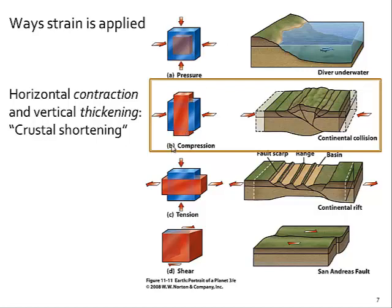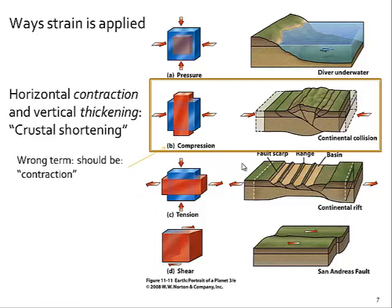Looking at contractional and collisional environments, here we have horizontal shortening — crustal shortening — where lithosphere is shortened laterally and thickens vertically. We see our reference body in blue showing how it shortens laterally and thickens vertically: this is a contractional setting. You should actually avoid the term 'compression' in this context, because compression refers to stress features, whereas here we are looking at strain — the actual change in shape: horizontal shortening and vertical thickening. We are not looking at the forces responsible for this change in shape.